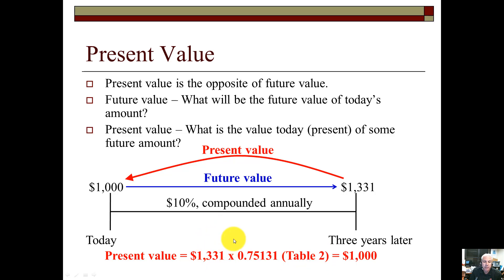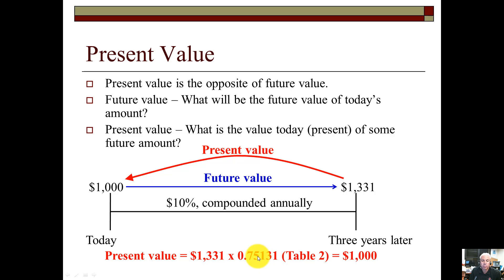We take the $1,331, look up the factor for 10% and three years from Table 2, get the factor 0.75, multiply them together, and we get $1,000.